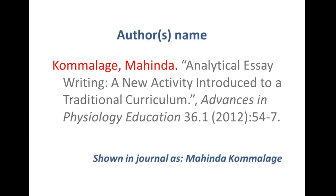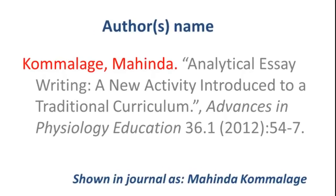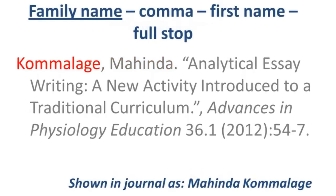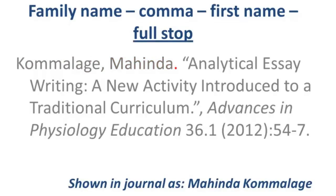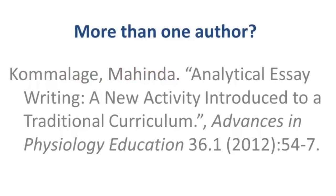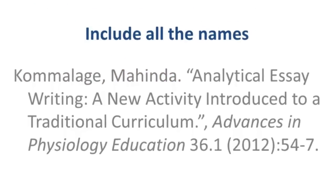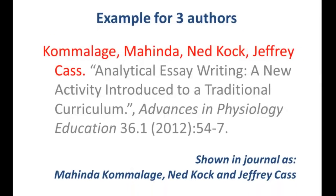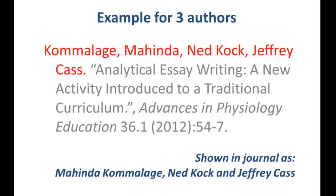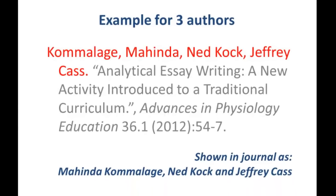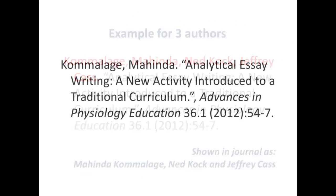Author. This is the author of the journal article. It is the family name with only the first letter capitalised, comma, first name, followed by a full stop. When you have more than one author, you need to include all of the names. This is an example for three authors. For further assistance, see the library's reference and citation page.